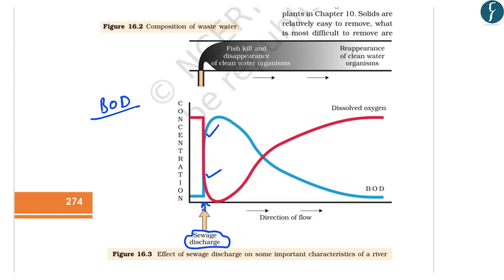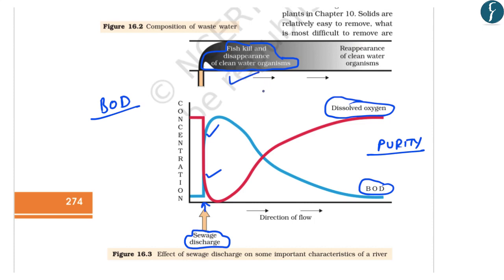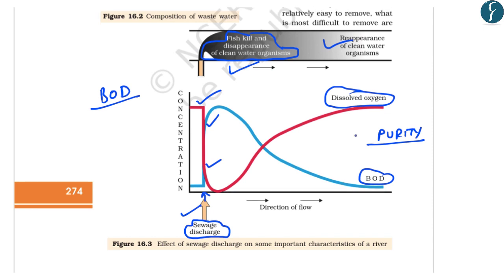As one moves away from the sewage discharge point, things start normalizing again — dissolved oxygen increases and Biological Oxygen Demand decreases. At the point of sewage discharge there will be killing of fishes and disappearance of clean water organisms, but as one moves away, clean water organisms reappear. A question related to BOD has also been asked in the preliminary examination previously.